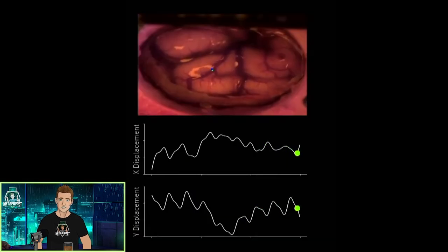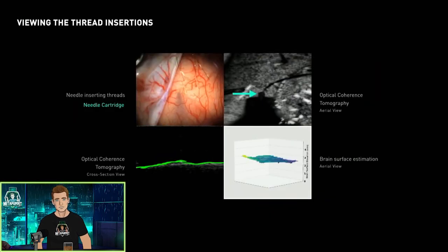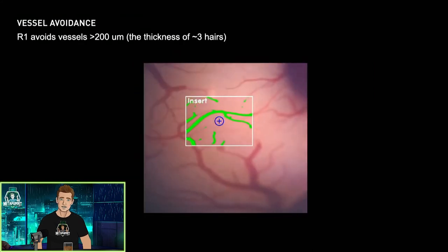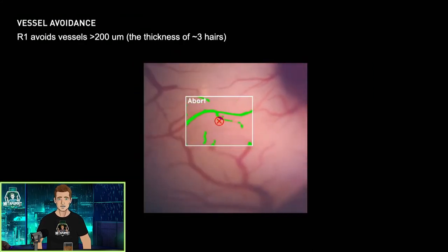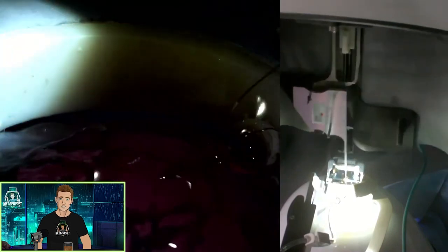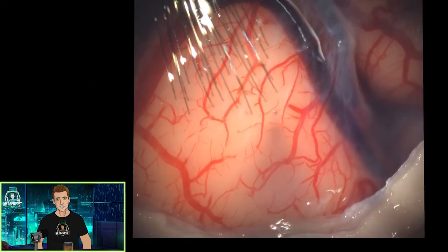Couple this with the fact that the brain is constantly wiggling, and there's vasculature that could cause a bleed if punctured, and you get why you might feel safer with a robot. R1 uses three imaging systems at once, which enables the robot to achieve vessel avoidance in real time, making it a much safer surgery than if attempted by a human.